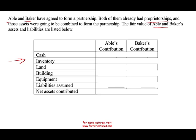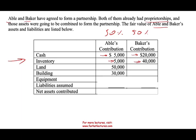The first thing to notice is they did not specify the sharing ratio — if they don't, it means it's 50-50. Abel is going to contribute 5,000 cash; Baker, 20,000 cash. Inventory: Abel contributes 5,000, Baker contributes 40,000. Land: 50,000 for Abel, nothing for Baker. Building: Abel contributes a building. Each one of them also contributes a piece of equipment — one for 10,000, one for 20,000. However, Abel is assuming a liability against one of the assets.